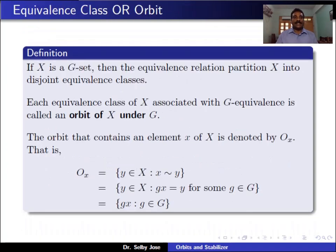Hence this relation is an equivalence relation on X, and this equivalence relation partitions the set X into disjoint equivalence classes. We call these equivalence classes the orbit of x under G. The orbit of x, denoted O(x), is the set of all elements in X that are related to x — that is, the set of all y in X such that g*x equals y for some g in G. In fact, that set equals {g*x : g belongs to G}, all possible choices of g*x as g varies over G.